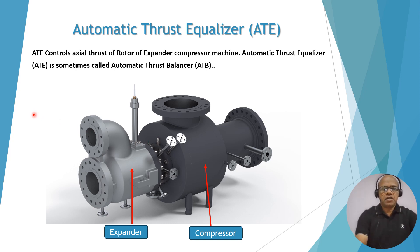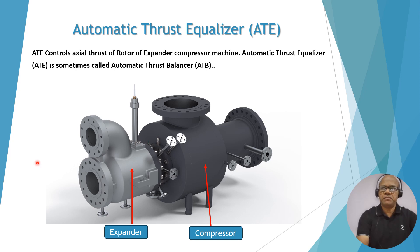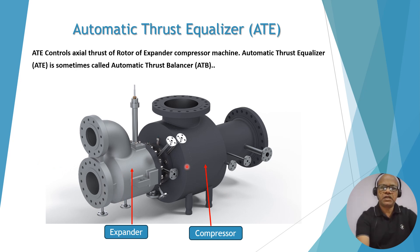This is an expander-compressor machine. The ATE is installed on the expander side or sometimes on the compressor side. We will discuss ATE operation when it is installed on the compressor side. This is the expander side and this is the compressor side — both are connected with a single shaft. This shows the expander inlet and expander outlet process gas, and compressor inlet and compressor outlet from the compressor side.